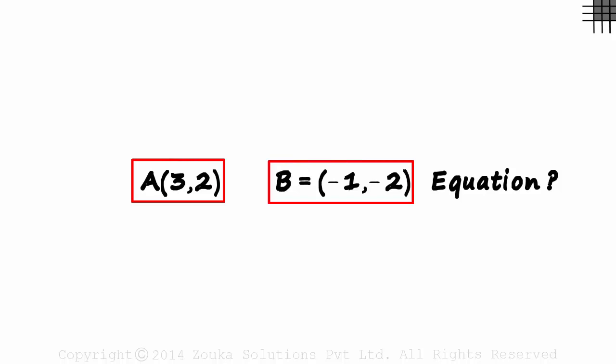Given the coordinates of two points, how do we find the equation of the line passing through them? We have been given the coordinates of A and B here. How do we find the equation of the line passing through A and B?